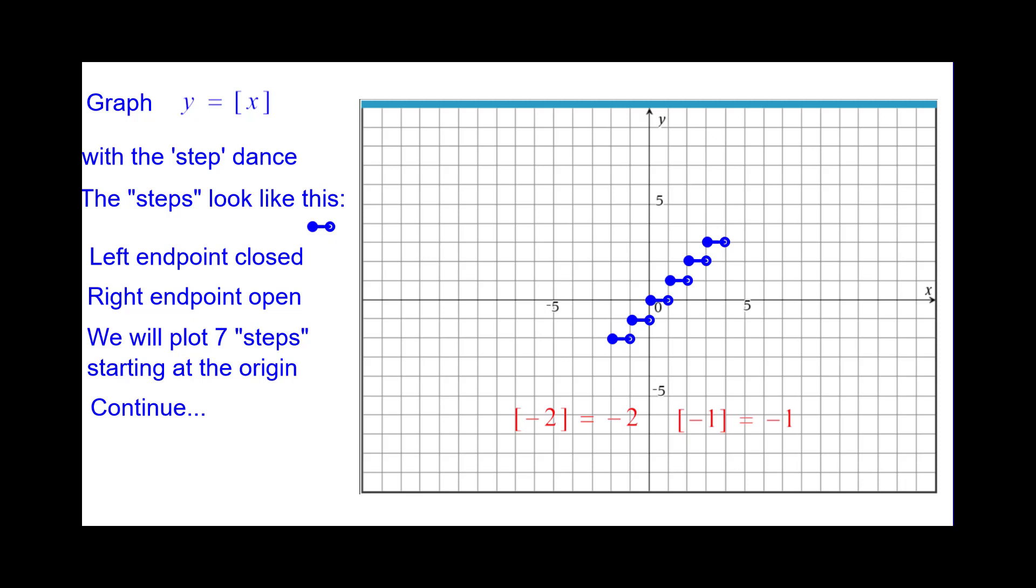The greatest integer of negative 2 is negative 2, and if negative 3, it's negative 3. There's about seven steps there.